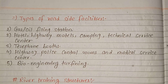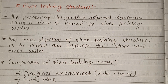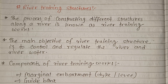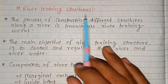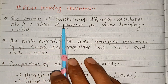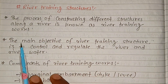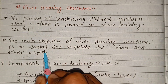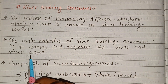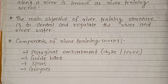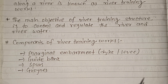River training structures involve the process of constructing different structures along a river. The main objective of a river training structure is to control and regulate the river flow. Components include marginal embankments and guide structures.